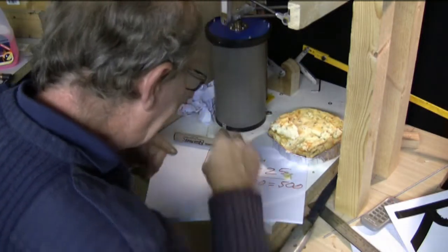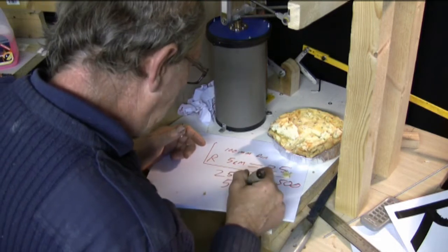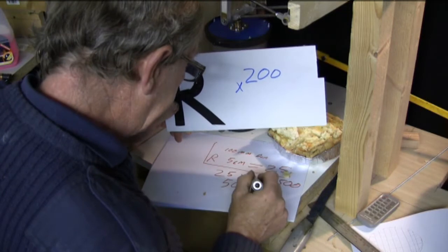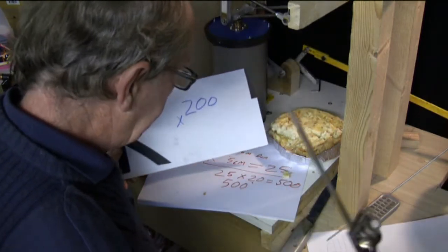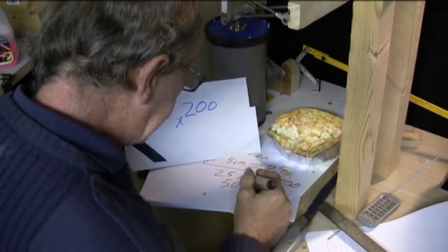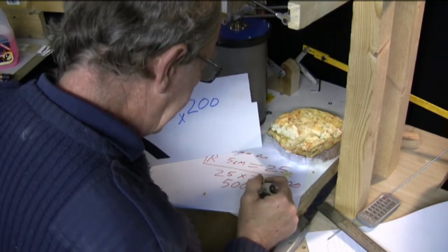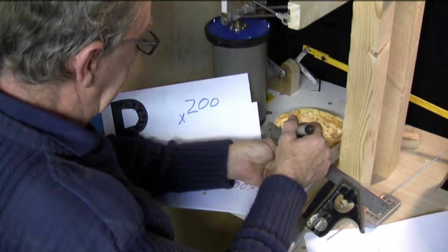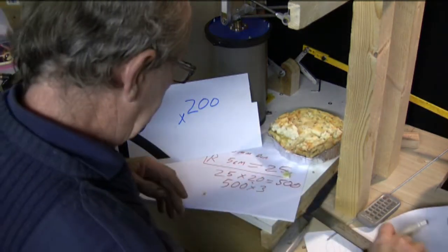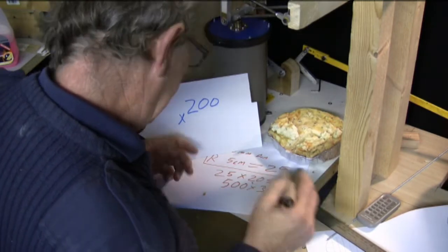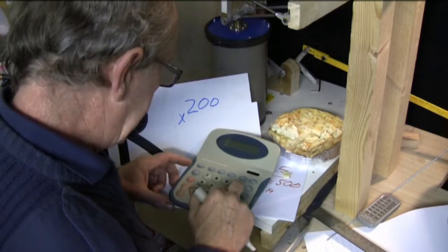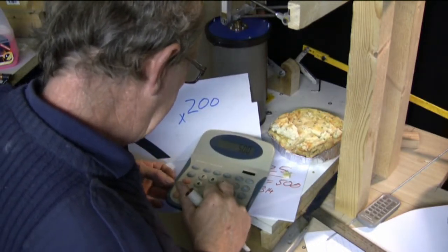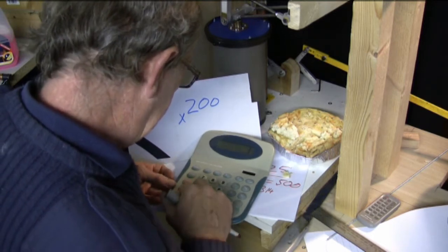So we've got 500 times pi r, which is the radius squared. So we've got squared pi. So that's 500 times what was it? Call it three. Three point what? Three point one and a bit. Call it three point one and a bit. So it's 500 times three and a bit pies. Equals.